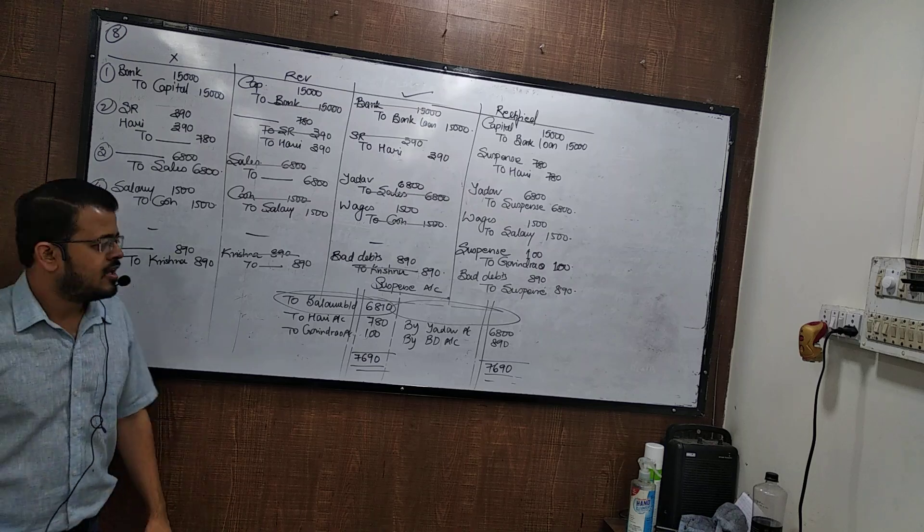The error in the second entry — correct entry was purchase to Rajesh, purchase to Ajay 3500. Wrong entry is purchase to Ajay 35,000. The book itself is wrong, so the ledger is also wrong. Reverse: Ajay to purchase. Rectified: Ajay to purchase 31,500. There is no suspense in the second transaction.